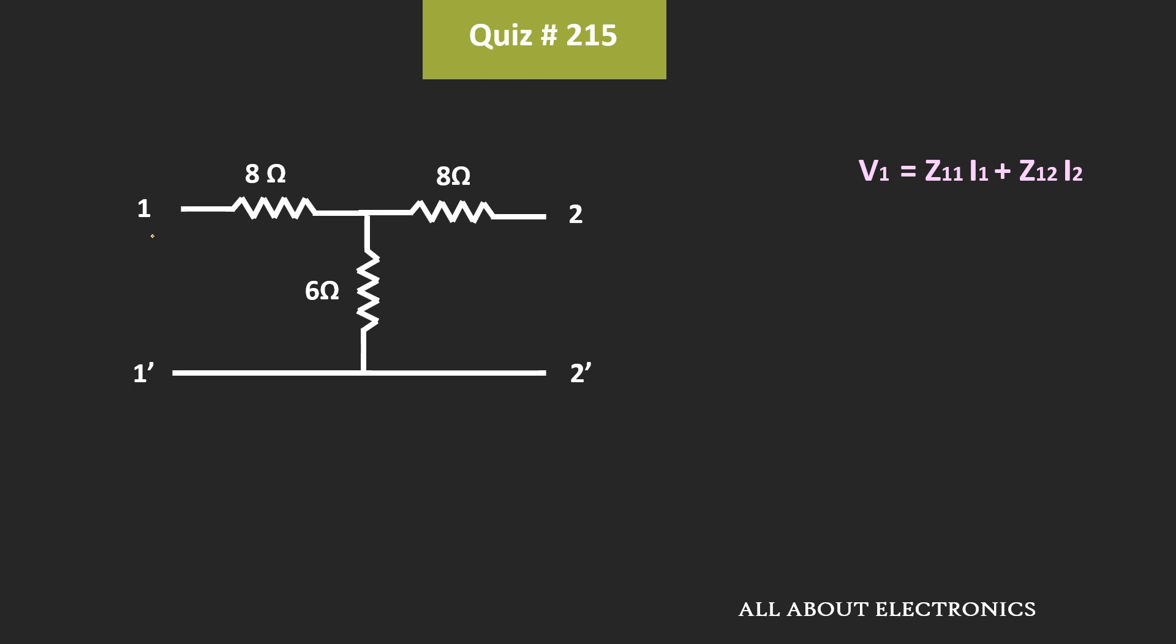And here let's assume that the voltage at port 1 is equal to V1 while the current is equal to I1. Similarly, the voltage and the current at port 2 are V2 and I2 respectively. So here, the current in this first loop will be equal to I1 while in this second loop it will be equal to I2.